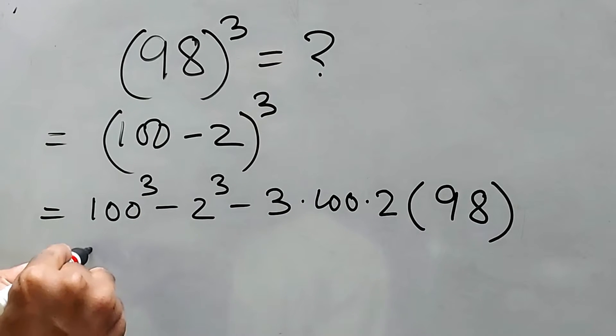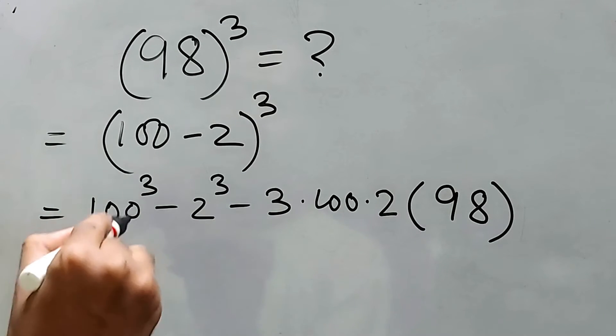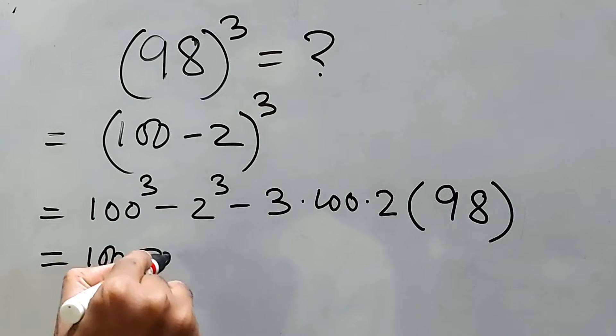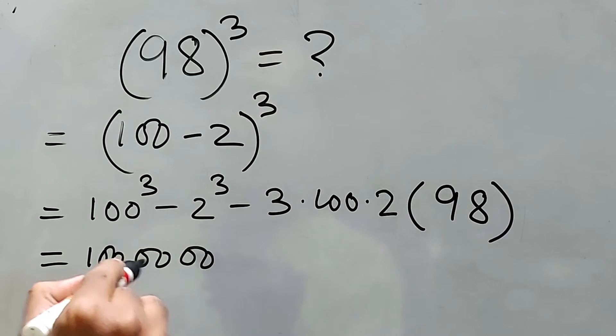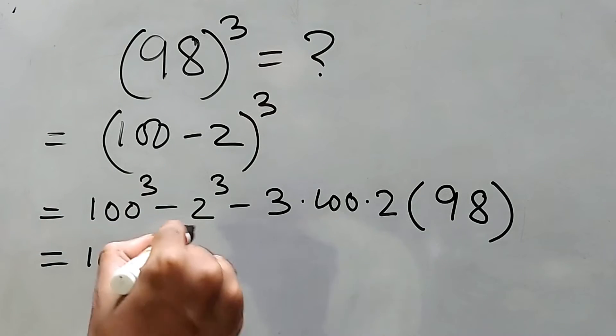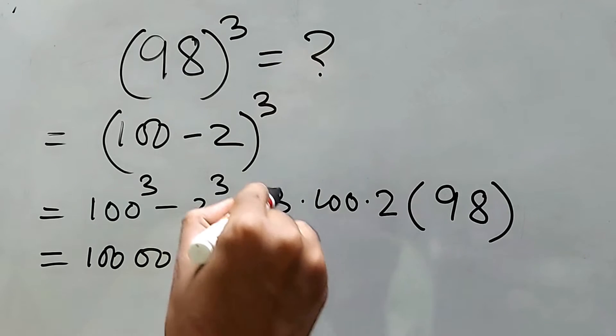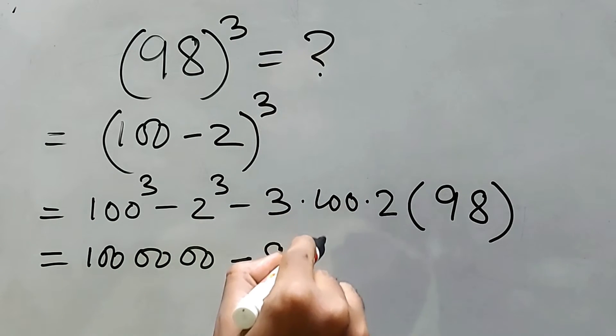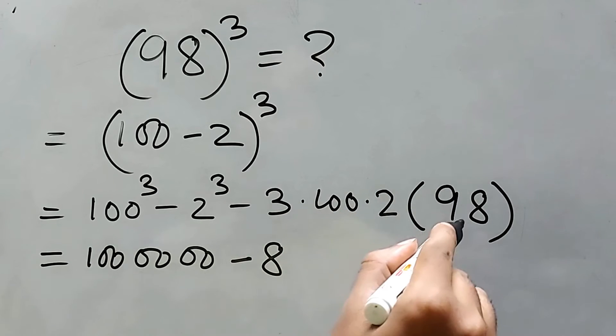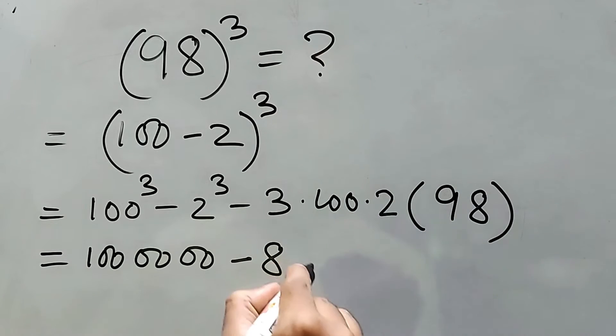100 cube means 100 double zero and double zero, right? Three times double zero. Now 2 cube is 8, we know this. Now 3 into 2, that is 6. Now 6 into 98 is simple: 588.